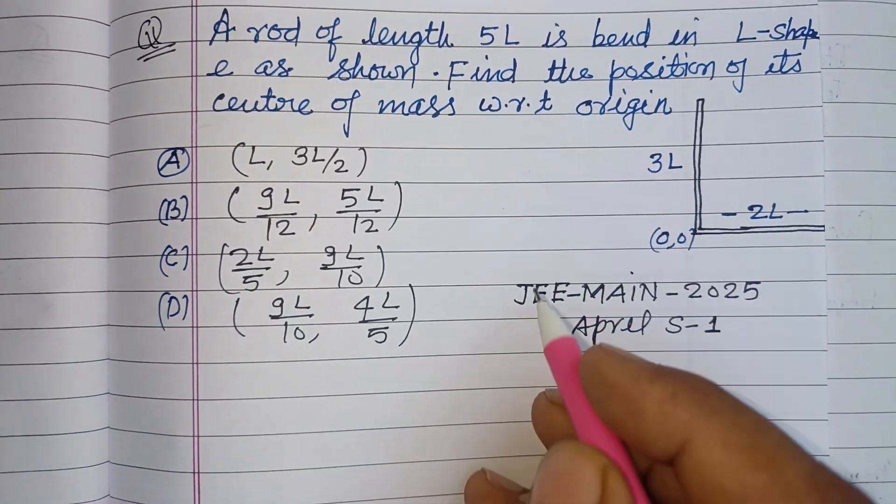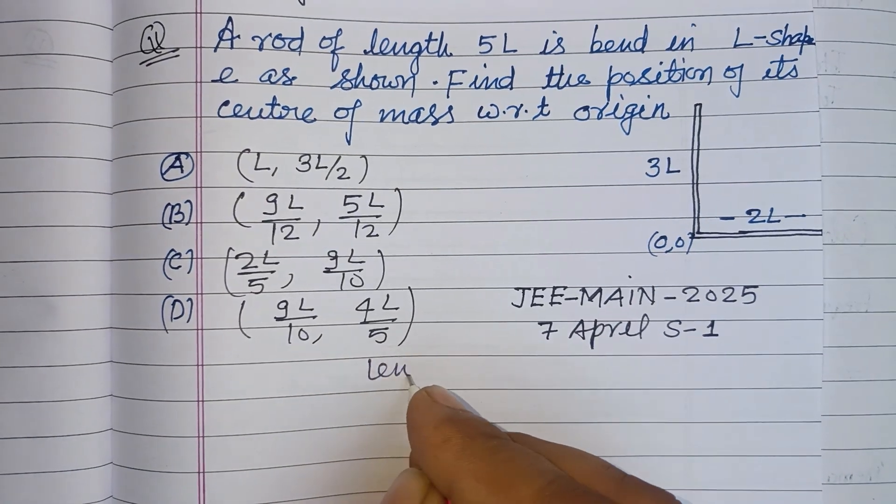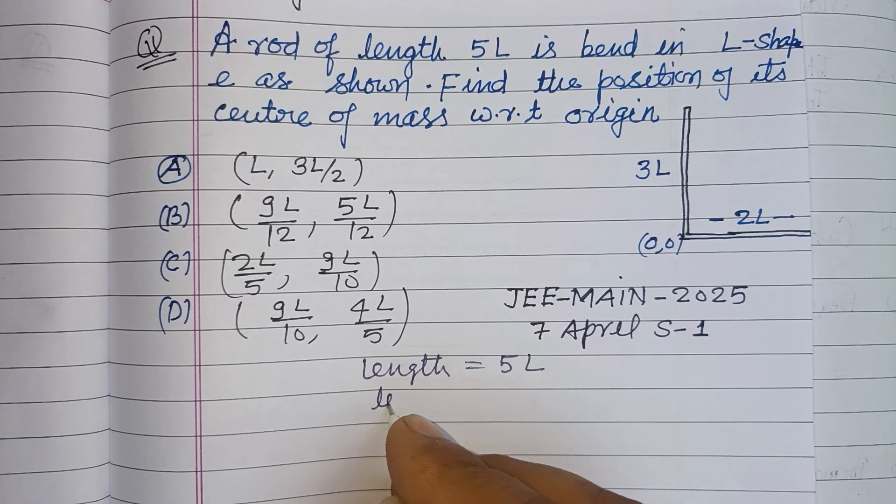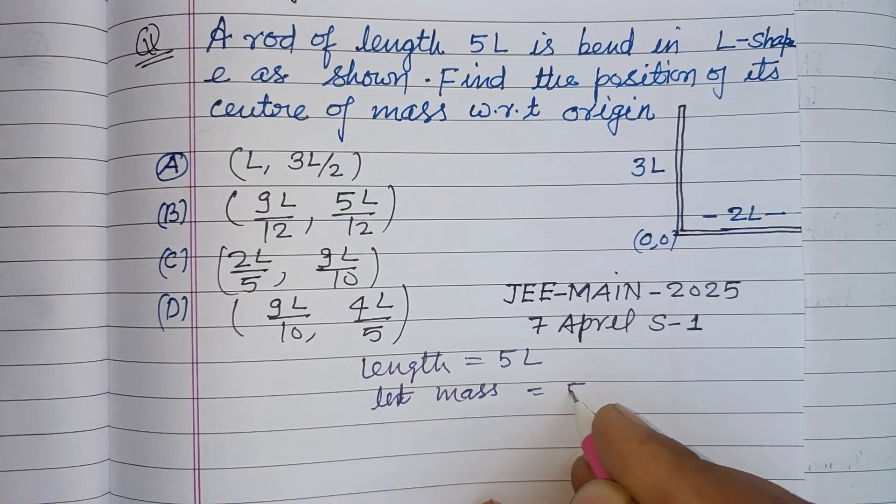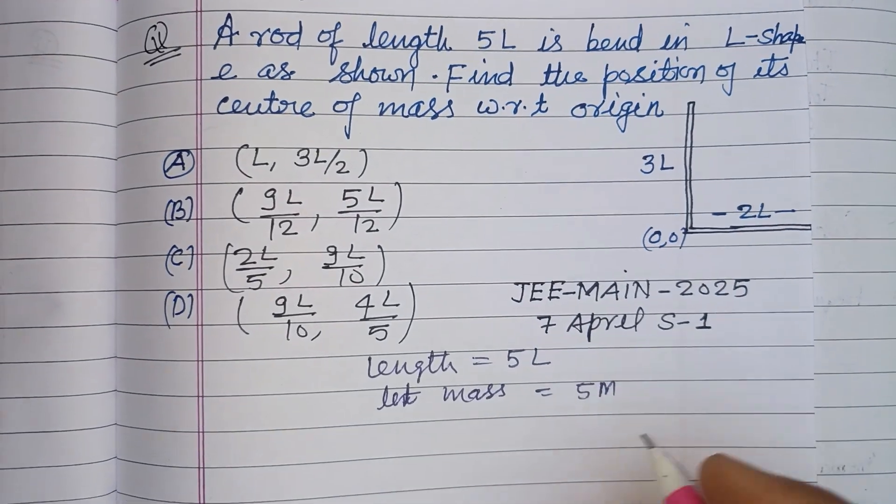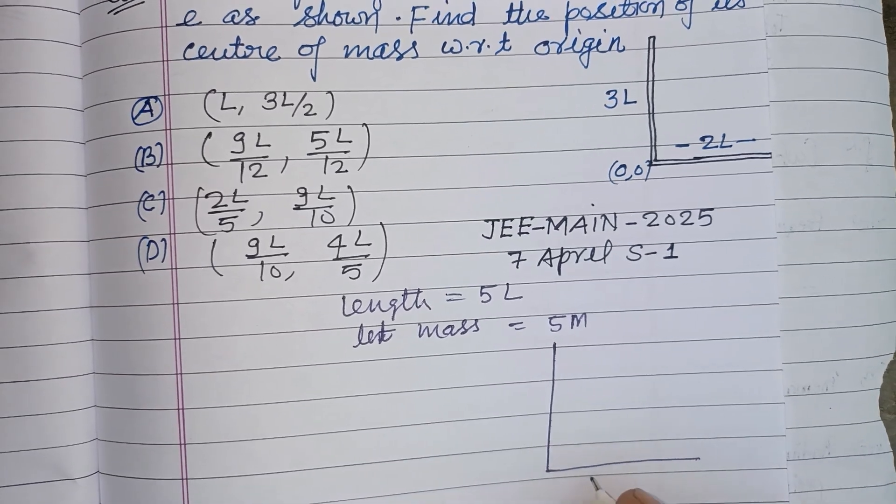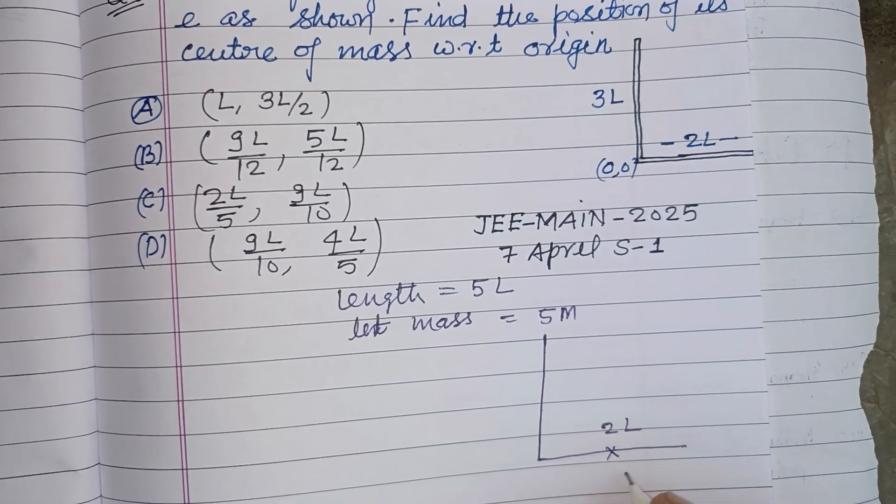So students, this is a rod of length 5L. Let mass is also 5M. This rod is of two lengths, so its center of mass is at L comma 0 at the midpoint.